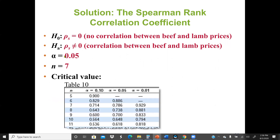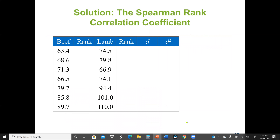With alpha equal to 0.05 and N equal to 7, we use the Spearman rank correlation table to find the critical value. Looking up N equals 7 and alpha equals 0.05, the critical value is 0.786. Next, we need to find the test statistic, but first we need to find the rankings. For the beef prices, the lowest value gets rank 1, with ranks assigned 1 through 7 from lowest to highest.